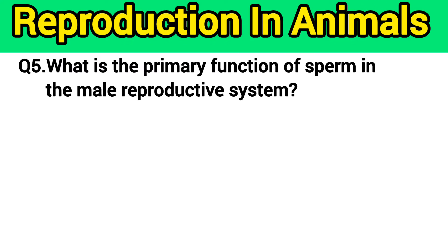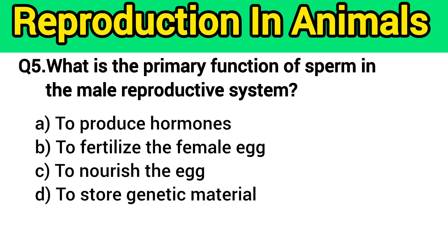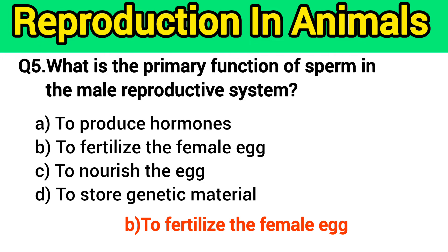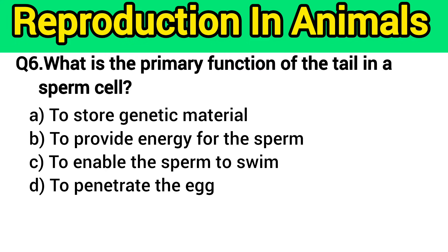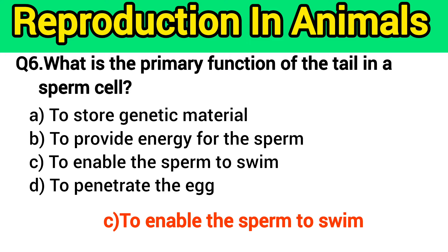Question number 5: What is the primary function of sperm in the male reproductive system? The right answer is option B — to fertilize the female egg. Question number 6: What is the primary function of the tail in a sperm cell? The right answer is option C — to enable the sperm to swim.